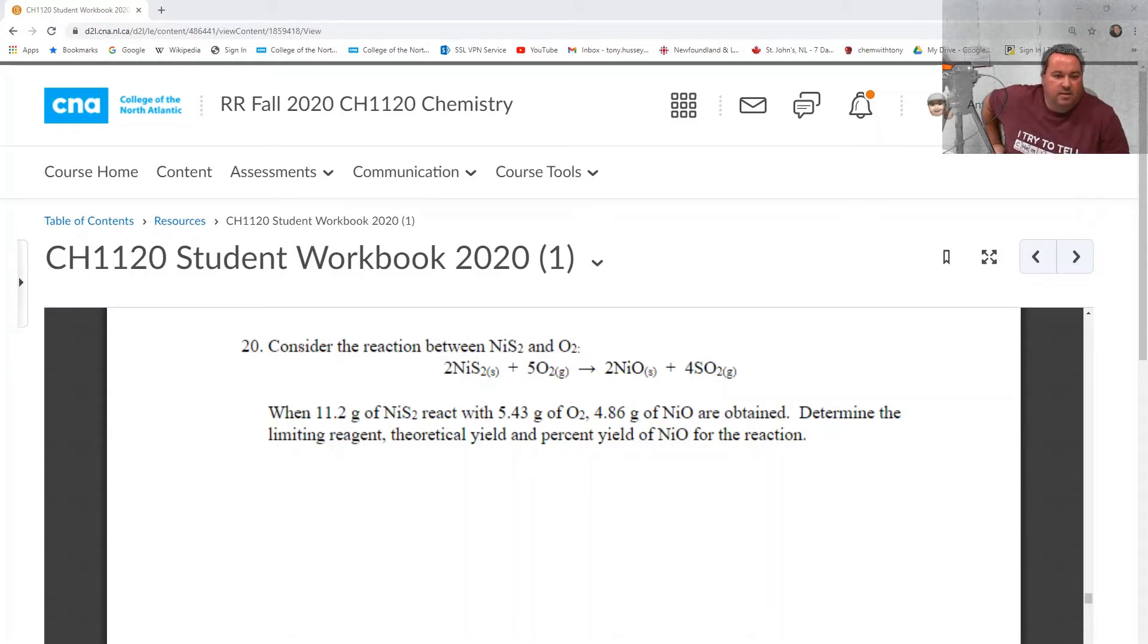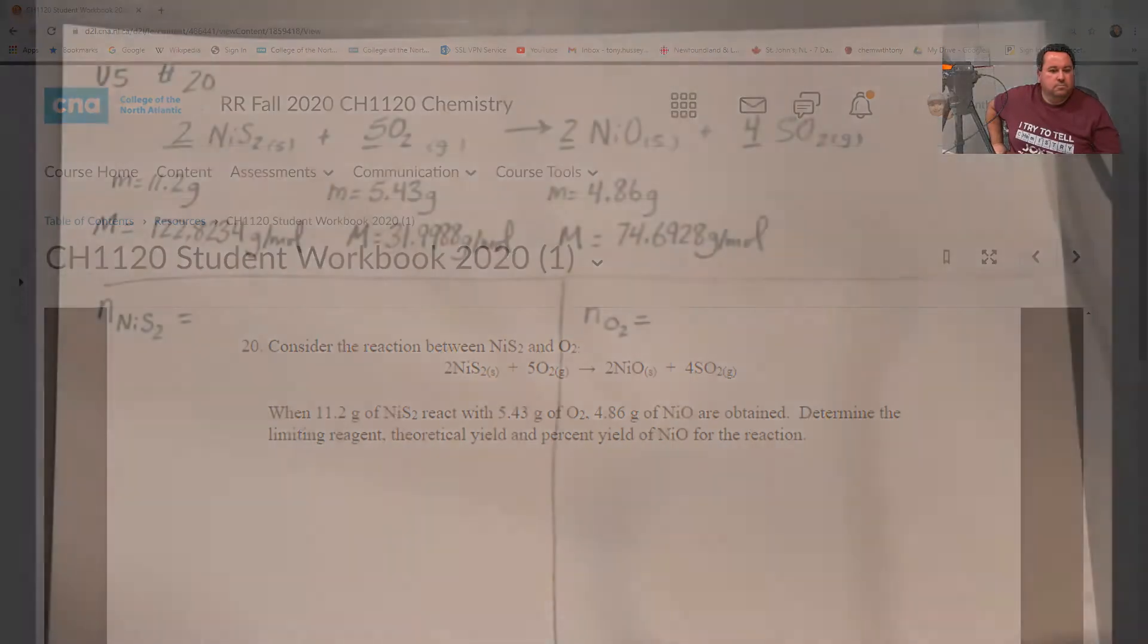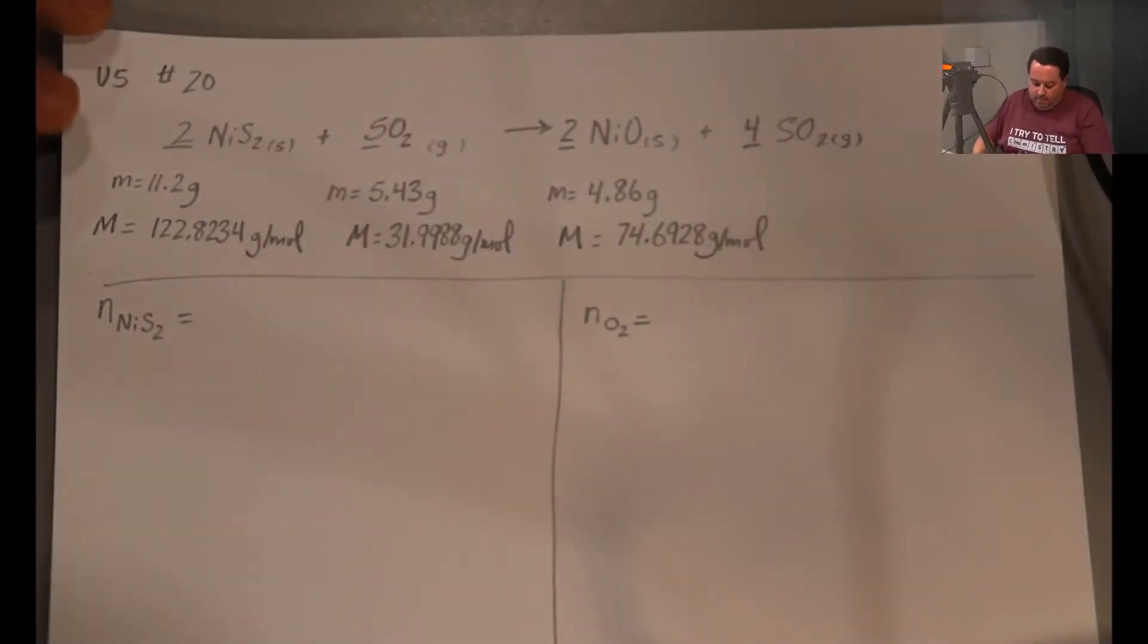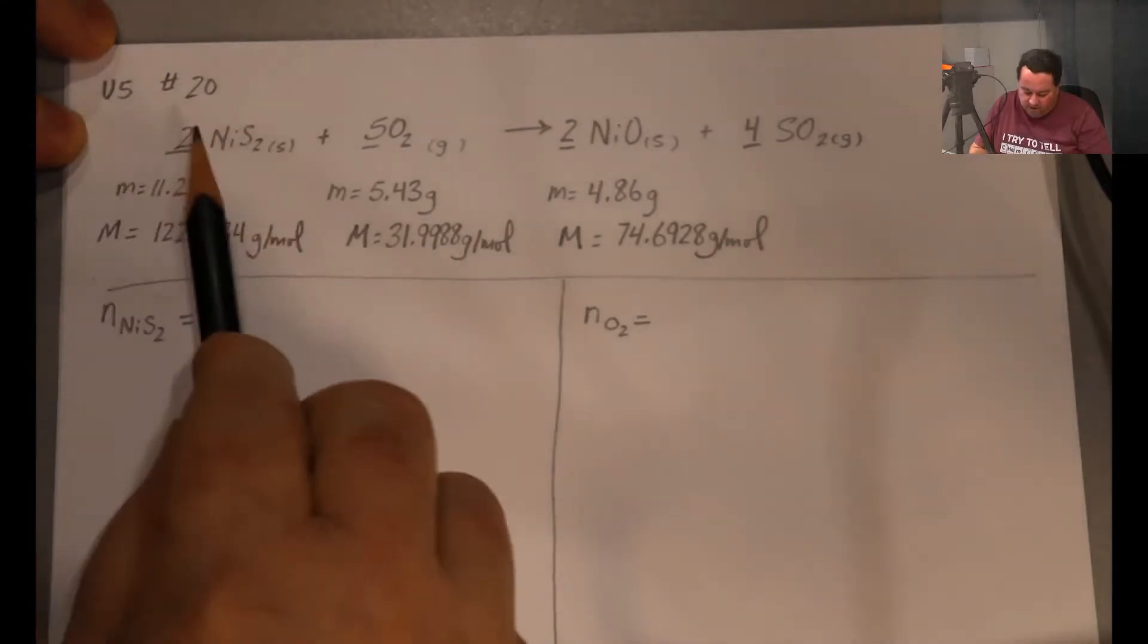We're given the amount of the nickel-four-sulfide, the oxygen, and the nickel-two-oxide that results. So we're asked to determine the limiting reagent and calculate the theoretical yield of the nickel-two-oxide, and then to determine the percent yield for the reaction.